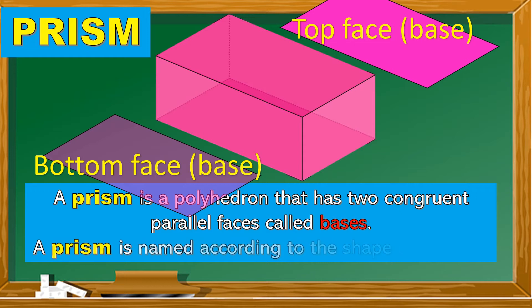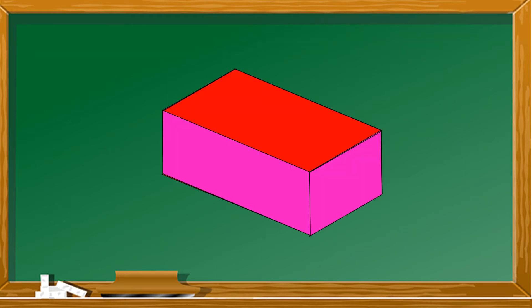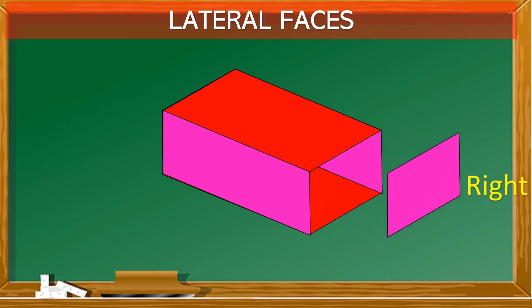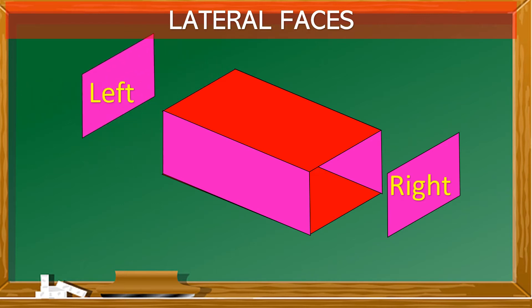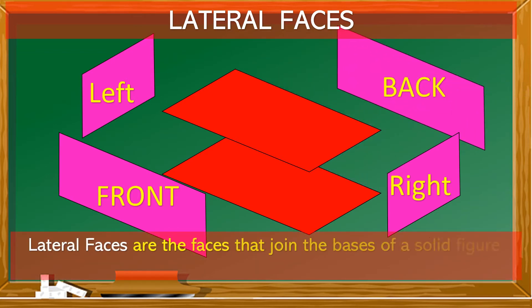A prism is named according to the shape of its base. Let's try to identify the lateral faces of this solid figure. We have the right face, the left face, the front face, and the back face. Lateral faces are the faces that join the bases of a solid figure, and each face is a polygon.